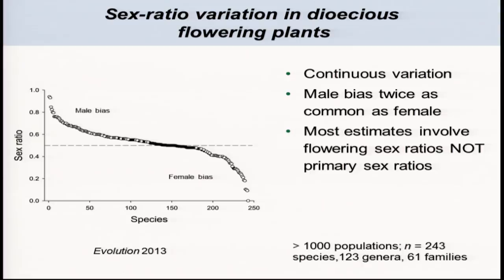What we now know is that difference in the cost of reproduction has a dramatic influence on sex ratios. This is a recent survey pulling together all available data from flowering plants on sex ratios. Each point is a different species. The evidence shows that the classic one-to-one sex ratio expected following Düsing and Fisher — based on frequency-dependent selection — certainly does not hold in every flowering plant. There's a huge amount of variability, and male-biased sex ratios are twice as common as female-biased sex ratios.